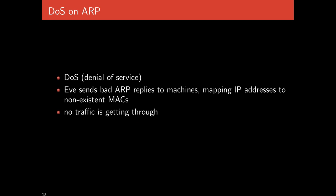Another attack on ARP is a denial of service attack. Eve could send a large volume of bad ARP replies, making IP addresses correspond to MAC addresses that don't exist — that no one is listening to. Now whenever Alice wants to talk to a particular machine, the MAC address used will not be listened to by anyone. This effectively takes down the entire network, since no machine will receive any traffic that belongs to it, mounting a denial of service attack.